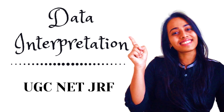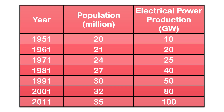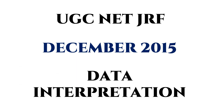Welcome back to AJ's classes for UGC NET. This video is on data interpretation, which is a very important topic in paper 1 of the NET exam. In most question papers, a table or chart is given and 5 or 6 questions are asked based on the data. It often involves simple mathematical calculations like percentages and ratios, but they still require a lot of practice. In this video, we are going to solve 6 data interpretation questions from the December 2015 UGC NET question paper.